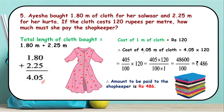So the cost of the cloth is 4.05 into 120. To carry out the multiplication, after the decimal there are 2 digits in 4.05, so we write it as 405 upon 100. This gives us 405 into 120 upon 100, which equals 48600 upon 100. The two zeros cancel, leaving rupees 486. So the amount paid by Ayesha to purchase this cloth is rupees 486.